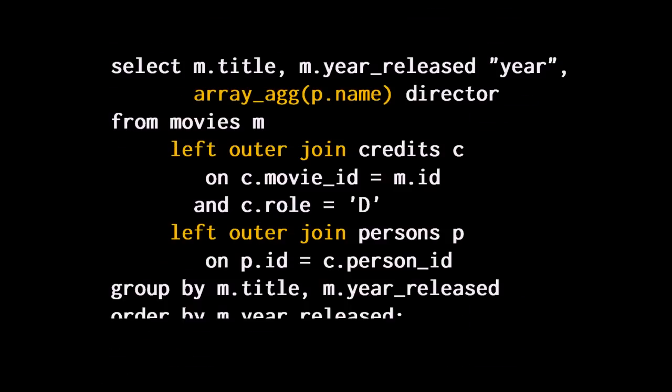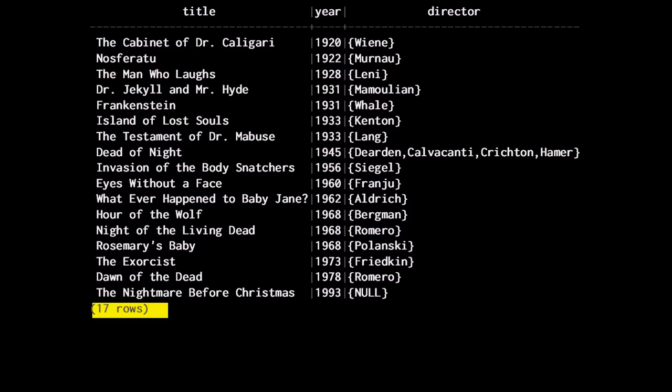To correct my query, I must first use a function to have a list of directors when I have several ones — array_agg with Postgres, group_concat with MySQL, listagg with Oracle — and use two LEFT OUTER JOINs: one to return null values from credits if I find no matching movie, and one to return an empty value from persons if there is no match in credits. Then I get the proper number of rows, the movie for which the director is unknown is present, and I have a single row for Dead of Night.